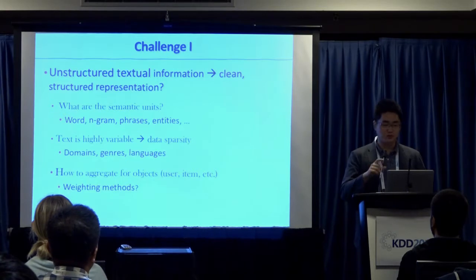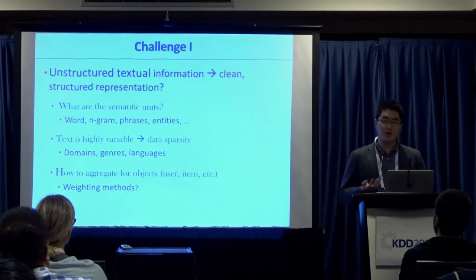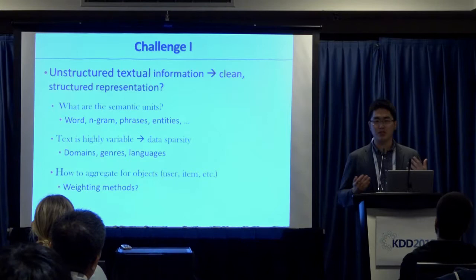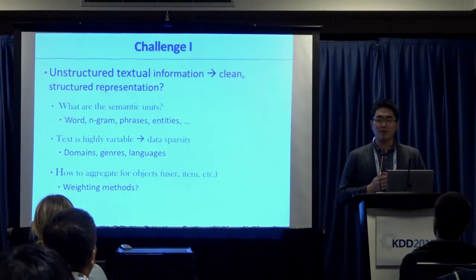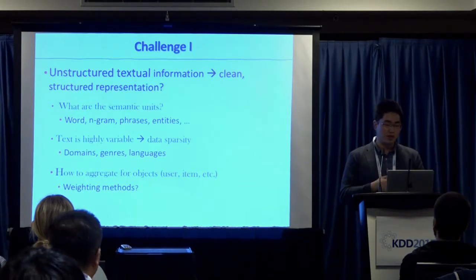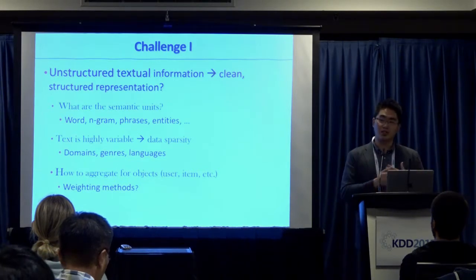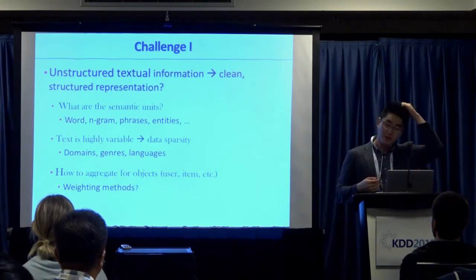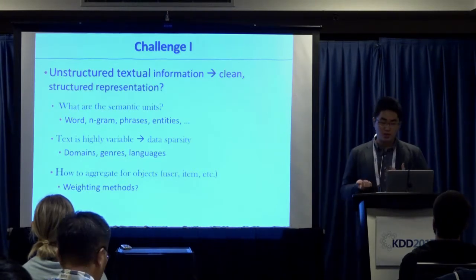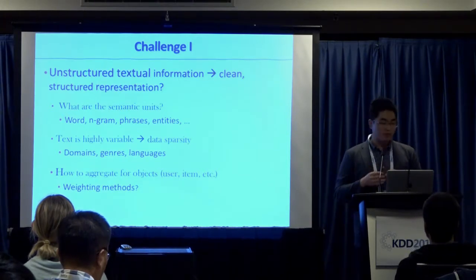There are lots of challenges. The core challenge is that text itself is unstructured — it's not a database table or spreadsheet that you can easily map into a feature table and apply machine learning algorithms. It's just a sequence of characters. And in many cases, think about tweets or reviews — it's a sequence of irregular text, maybe even consisting of different languages.